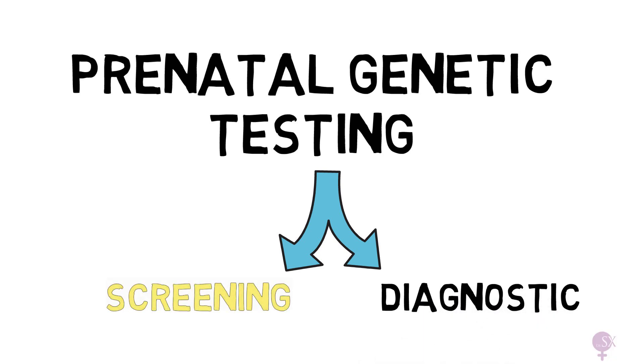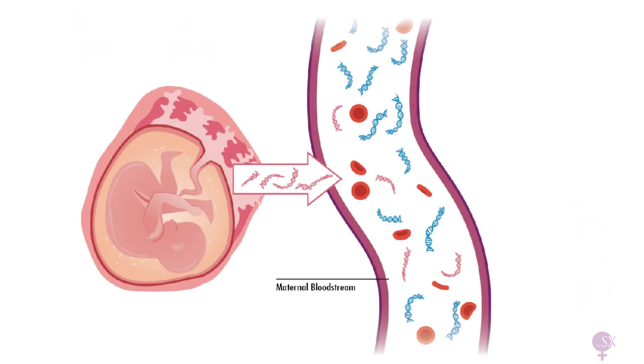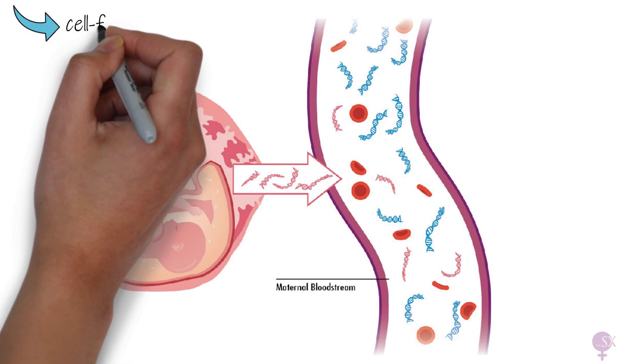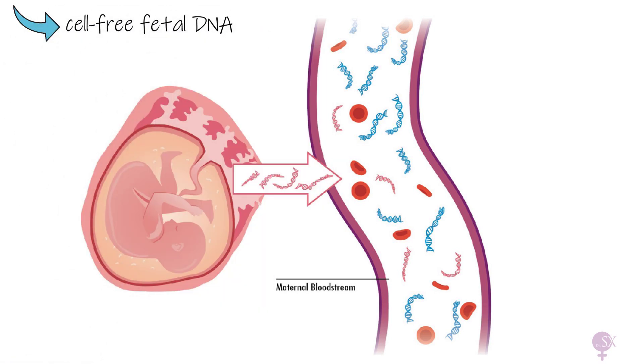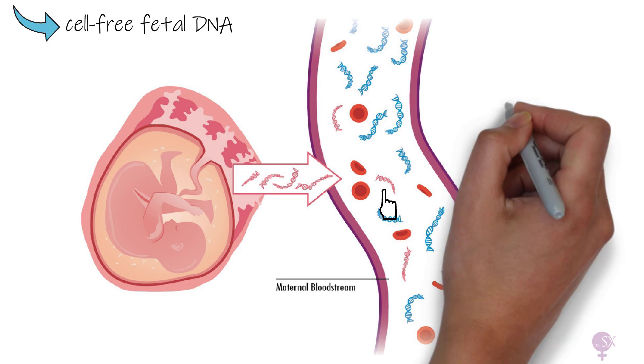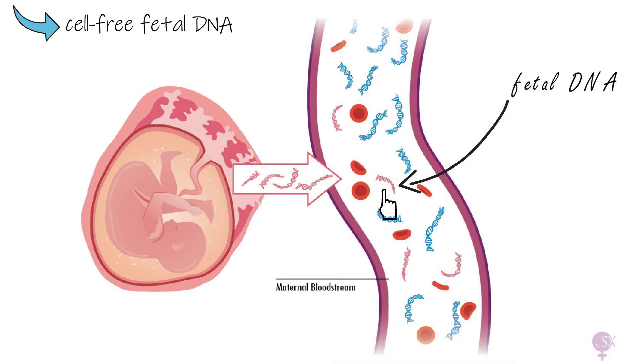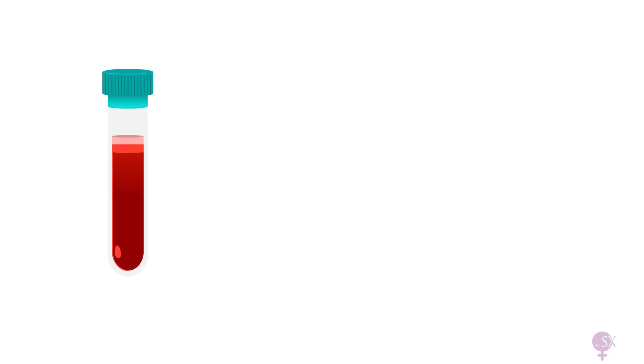NIPT is another screening test. NIPT uses cell-free fetal DNA to test for genetic conditions. Essentially, fetal DNA is shed from the trophoblast and present within the maternal bloodstream. In fact, around 10% of DNA present in the maternal circulation is actually fetal. Therefore, a blood test is taken from the mother.